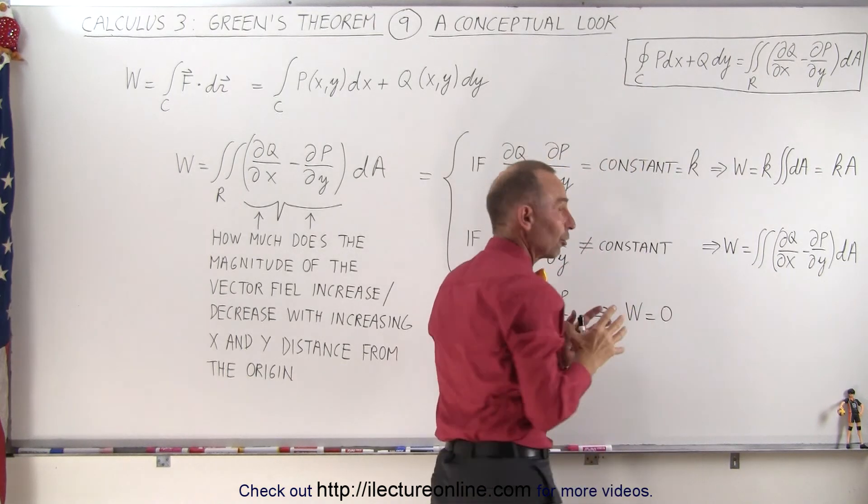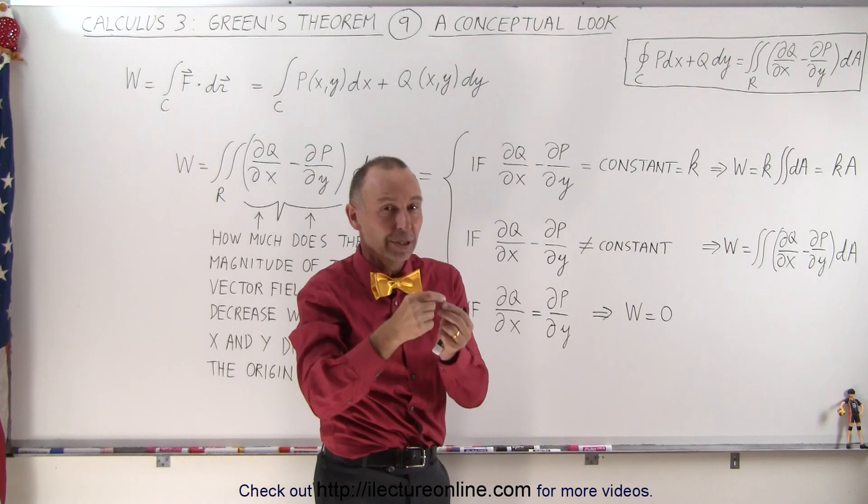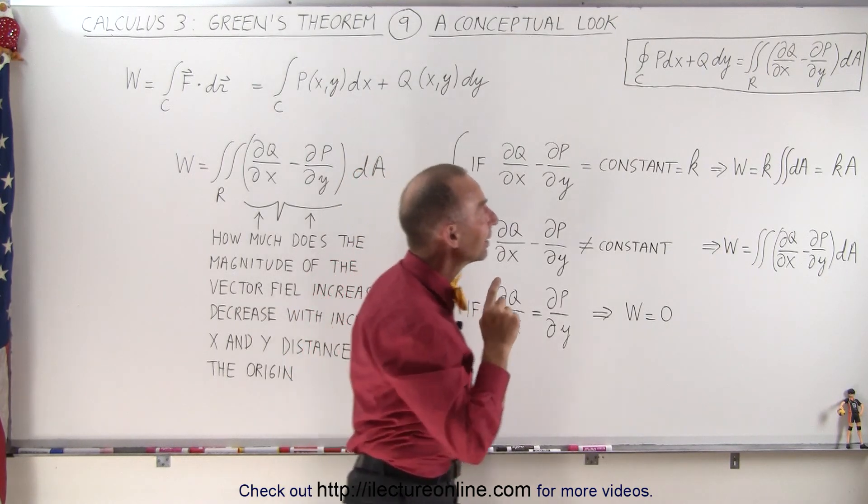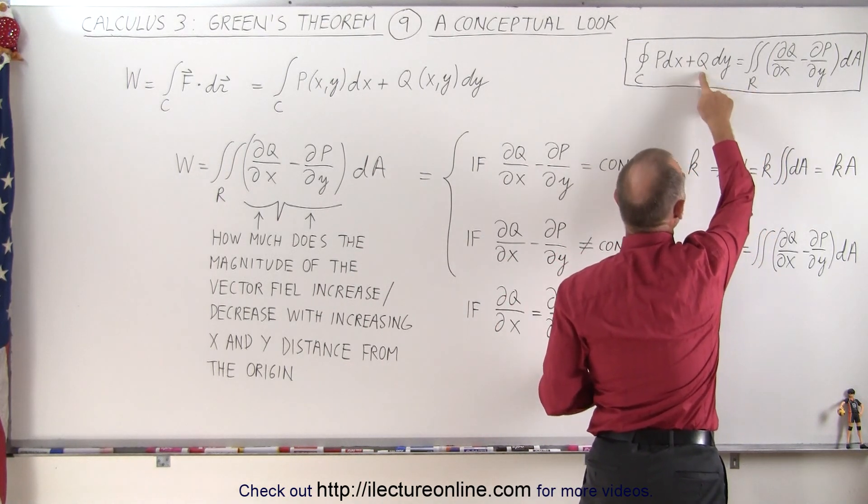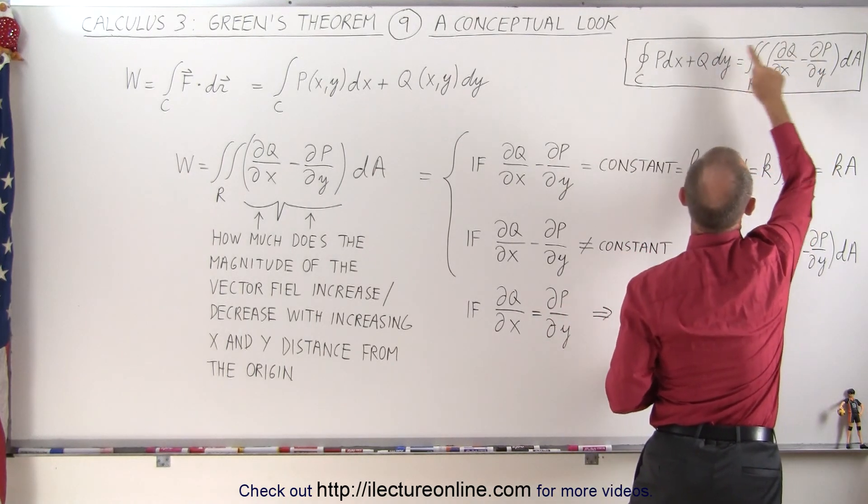The path needs to be a complete loop, so you start and end at the same place. That will be equal to the integral of the partial of the y component of the vector field with respect to x minus the partial of the x component of the vector field with respect to y times dA.